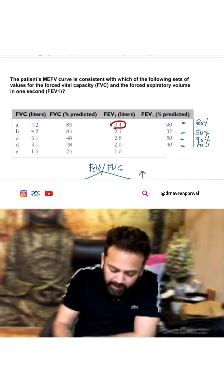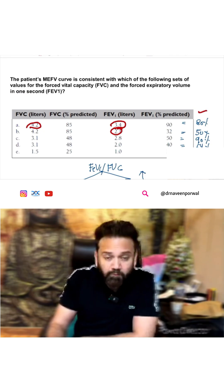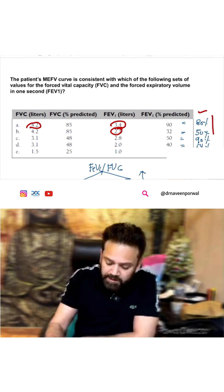FEV1 upon FVC - it will be 80 percent. FEV1 by FVC: 50 percent, 90 percent, 64 percent, 66 percent. This you have to calculate.